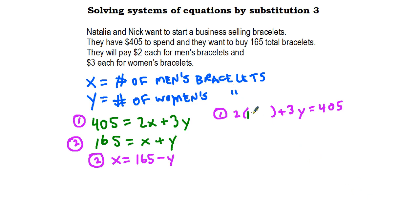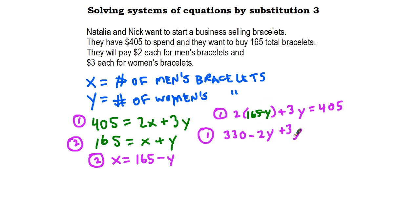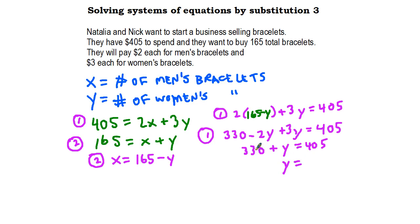So that gives us 2 times 165, which is 330, minus 2y plus 3y equals 405. If you want to make sure you get this right, add −2 + 3 to find the coefficient of y. That gives us 330 + y = 405. Then subtract 330 from both sides, and we get y = 405 − 330, which is 75.